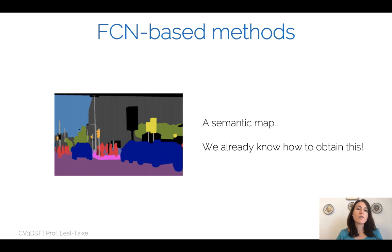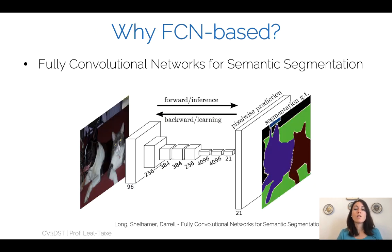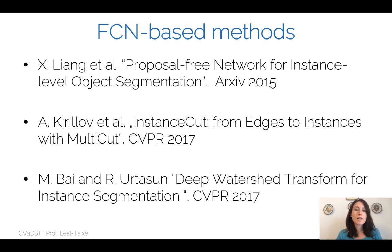FCN-based methods start from a semantic map, which we saw in the last lecture is produced with fully convolutional networks that can act on any image size. This is why FCN-based methods are powerful — they start from an already good semantic segmentation. Once you have the semantic segmentation, your goal is to separate the instances within each class. There are three methods I recommend reading to understand how they perform instance segmentation; I'll briefly discuss the second one to give intuition on going from edges to instances with multicuts.